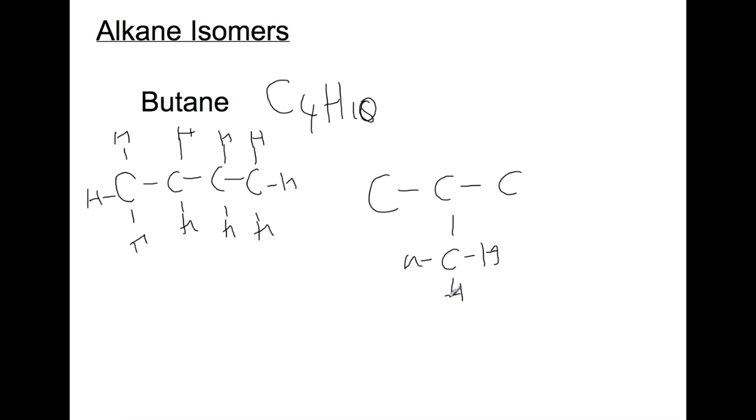One way to check if you have drawn isomers rather than just redrawn the same structure is to try and name your isomers. The structure on the left would be butane, the structure on the right would be 2-methylpropane. If they have different names then they have different structures.